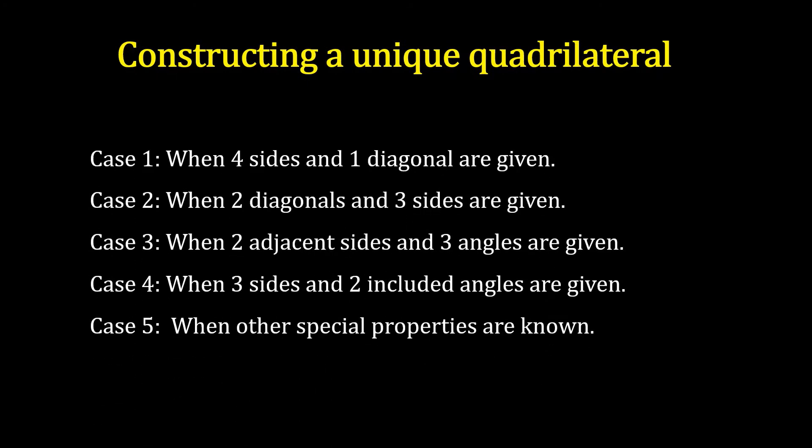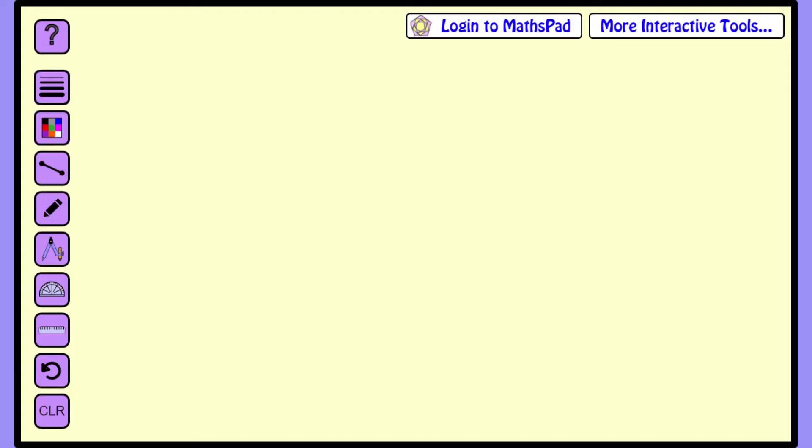In today's video, we will learn to construct a unique quadrilateral. There are 5 cases when 5 measurements are given. Today, we are going to take the first case where 4 sides and 1 diagonal are given.